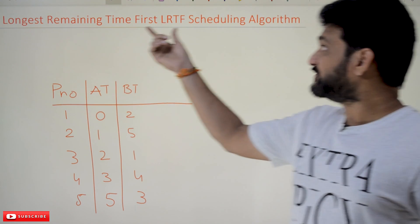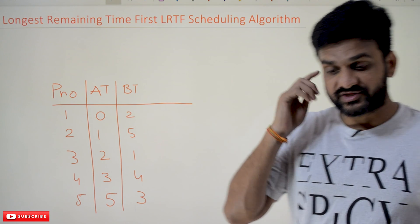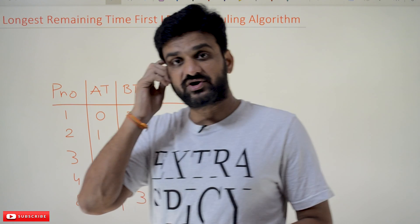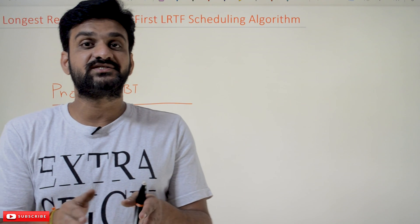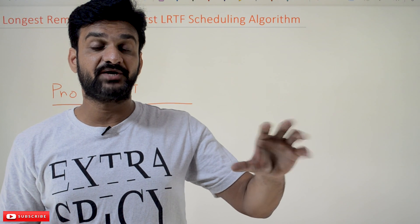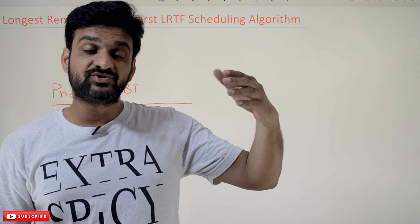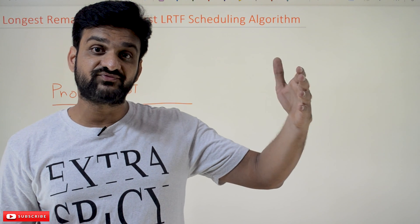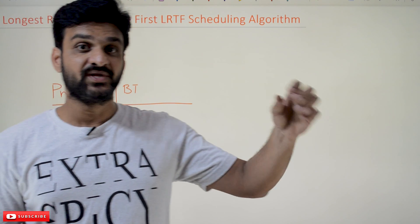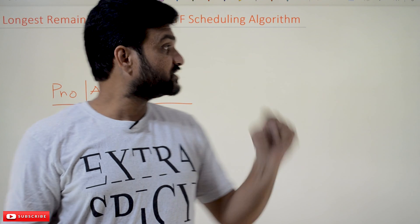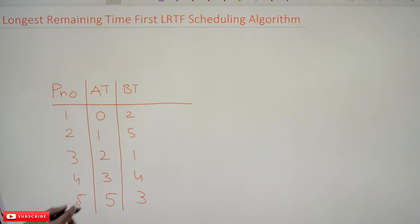Longest Remaining Time First, in short called LRTF, is the same as Longest Job First, but the only difference is that it is a preemptive algorithm. This means for every one unit of time the processor will get preempted — the process being executed will get switched. That is how LRTF works.